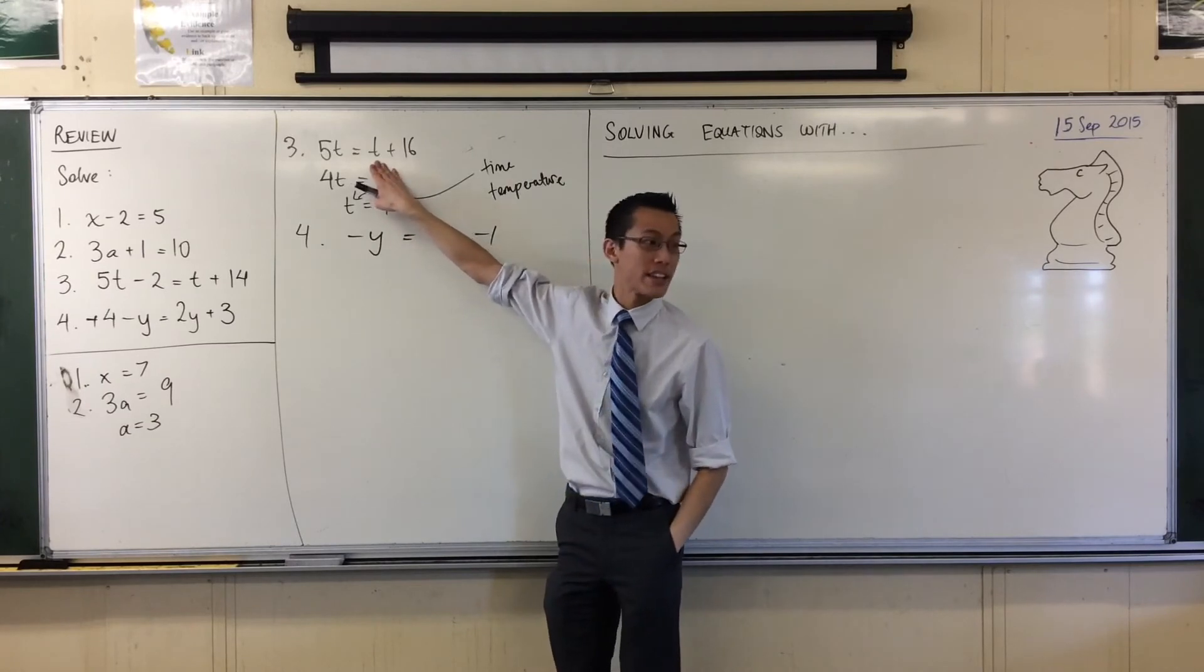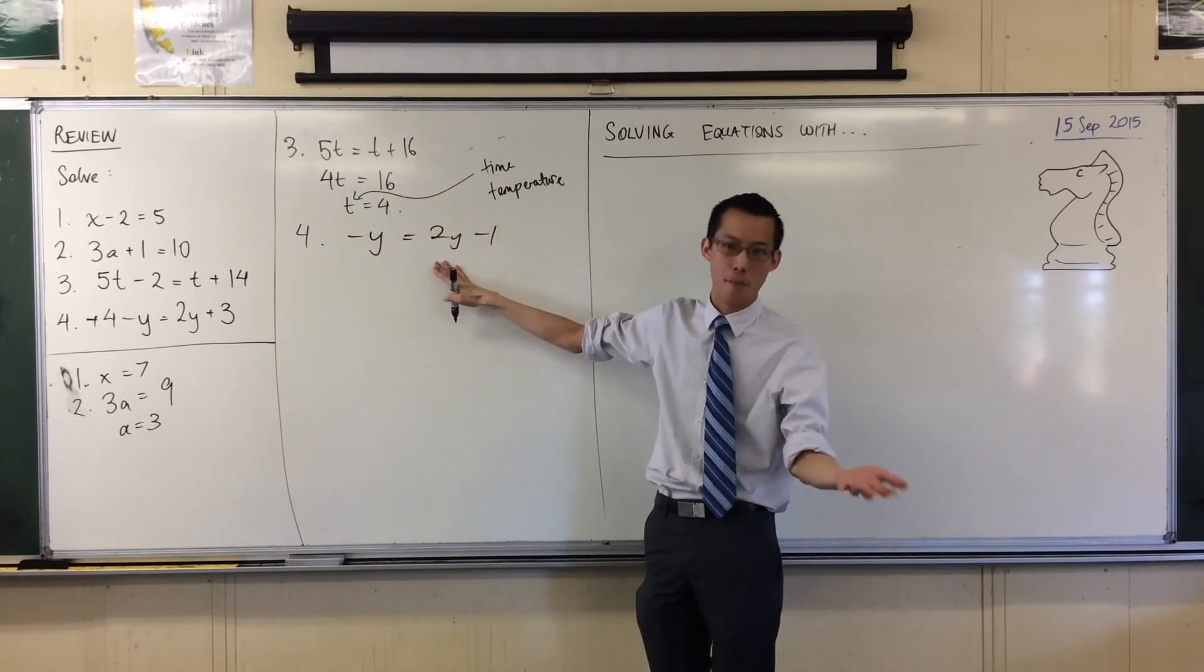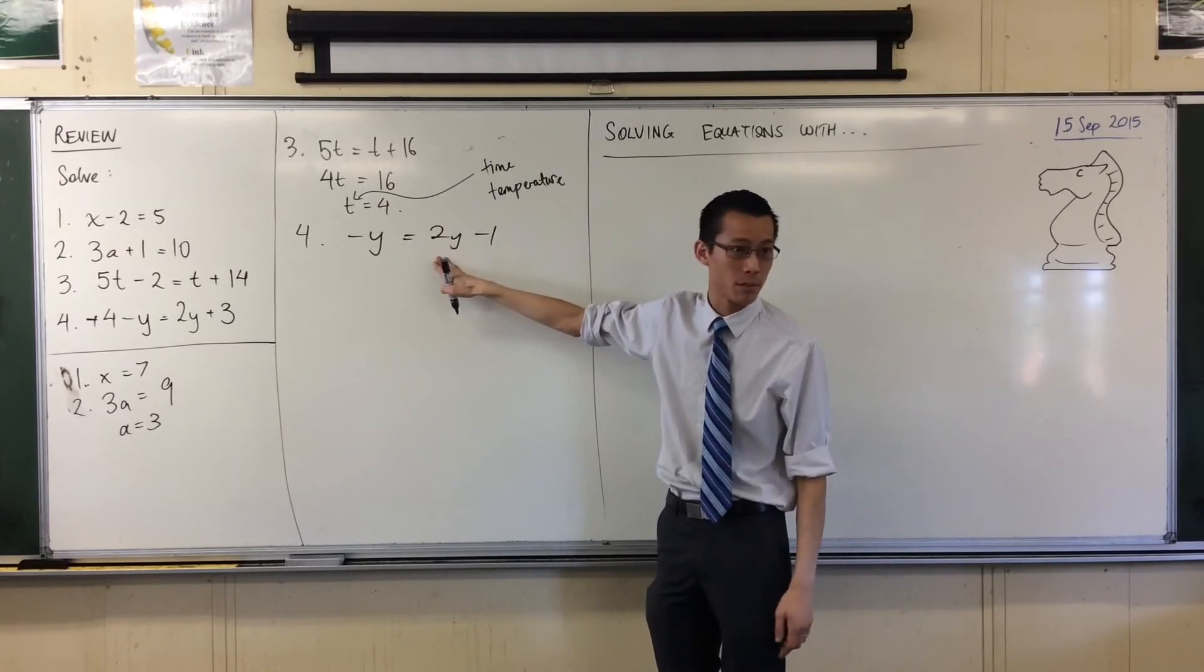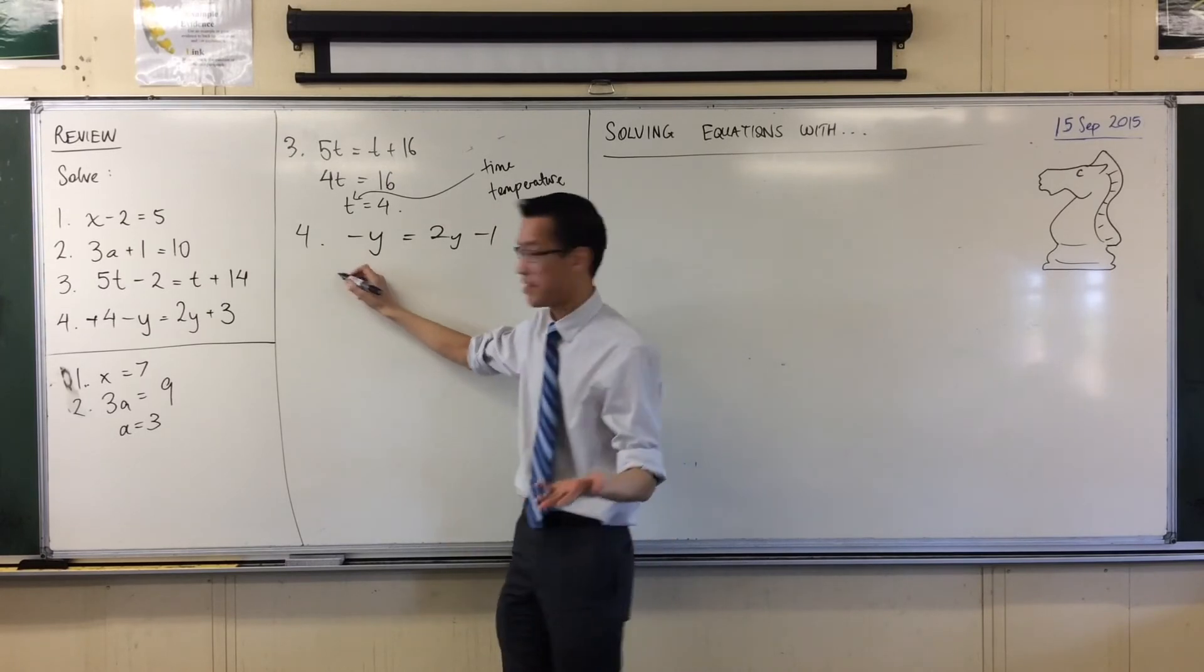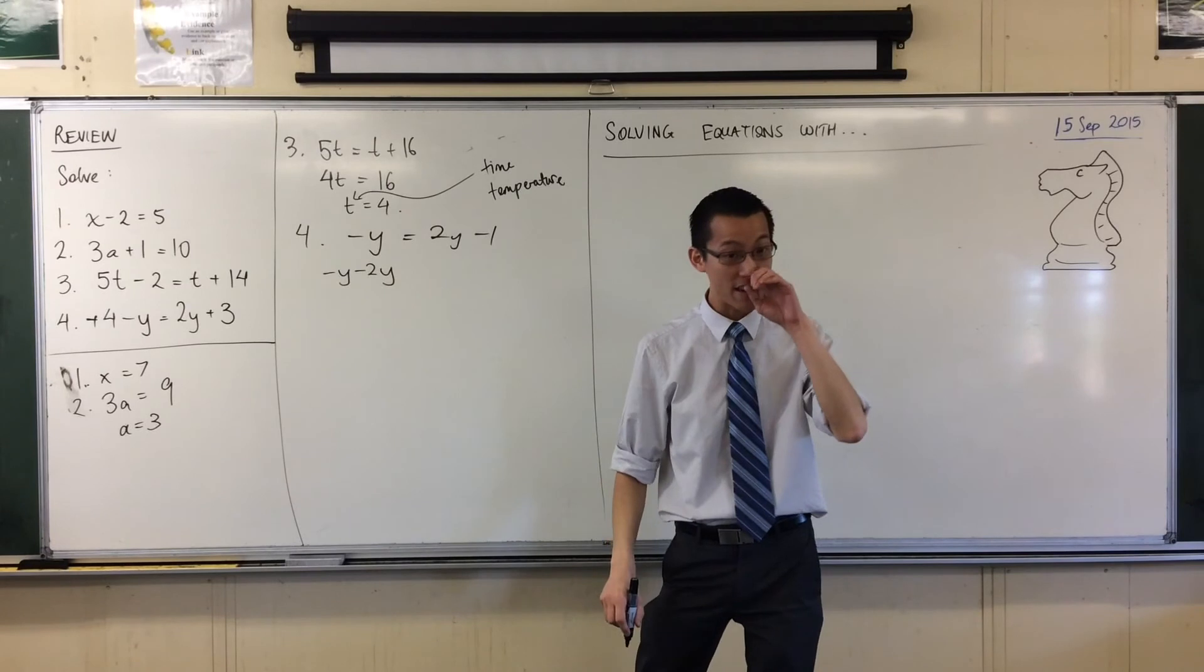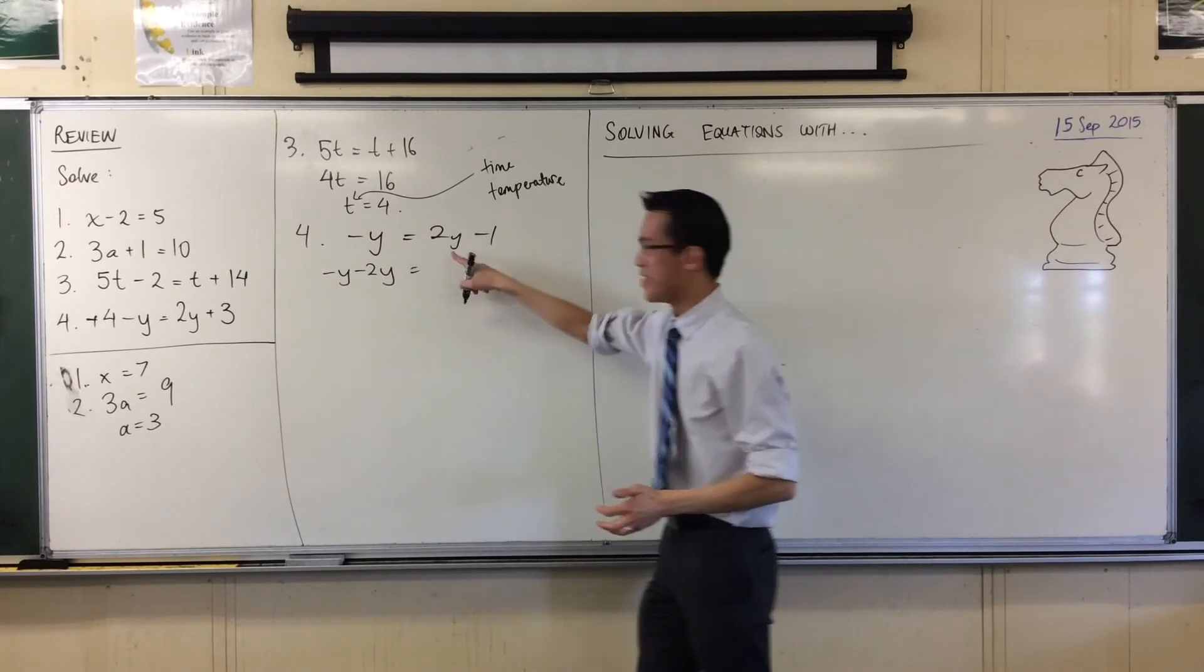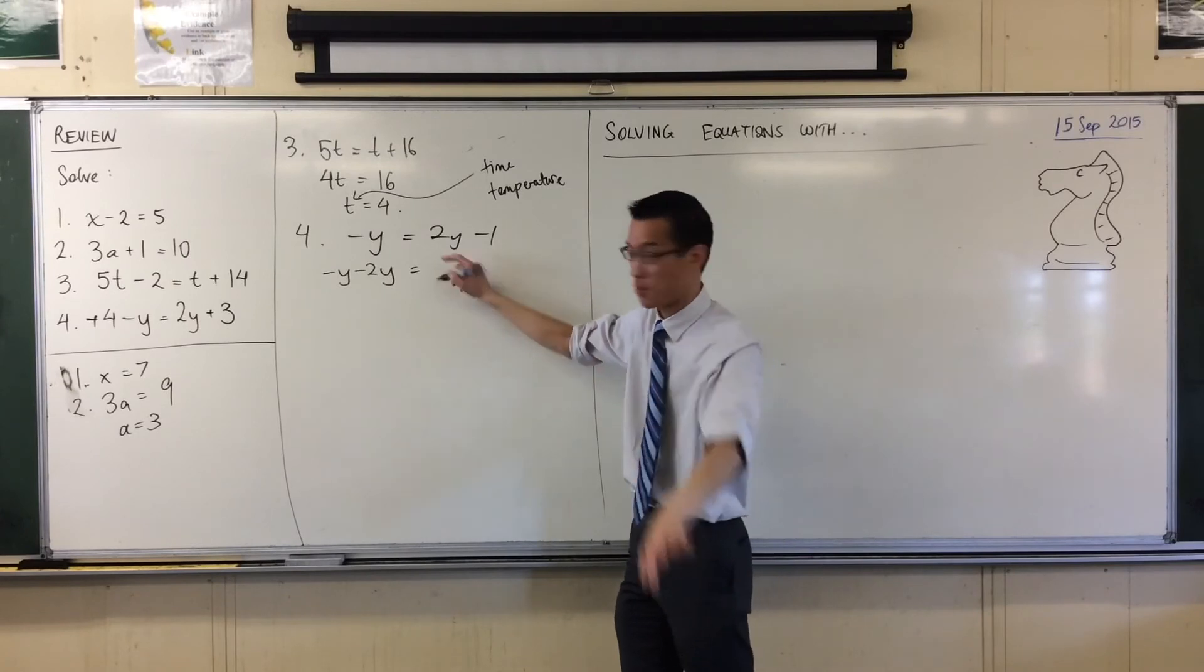Just like here, you took away a T from both sides. I'm going to take away 2y from both sides. I want to get rid of two of them, right? So you've got minus y here, I go minus y. I might even write this line so my head doesn't get too confused. Minus y minus 2y.